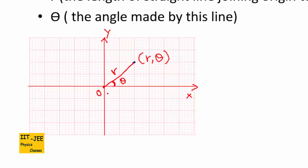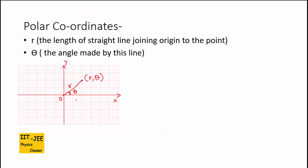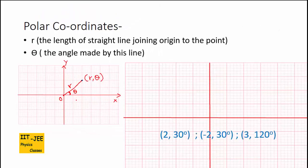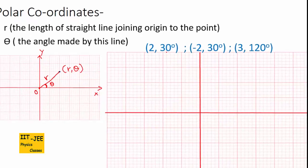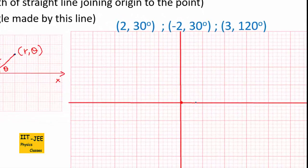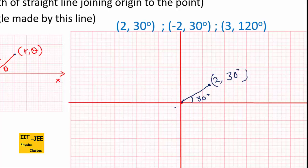In polar coordinates we represent the length of the line and the angle. Let's take some examples and represent these positions on a graph. The first position is 2, 30 degrees. We first draw the angle — 30 degrees from the x-axis — and then we mark a length of 2. This position is 2, 30 degrees.